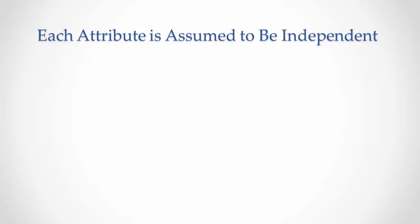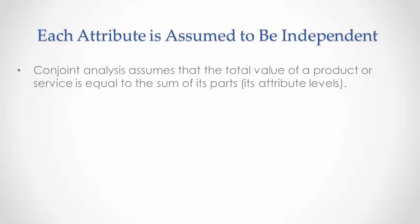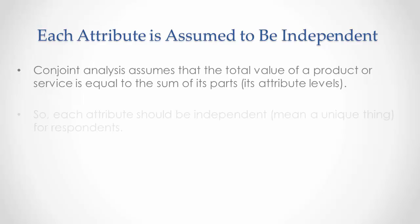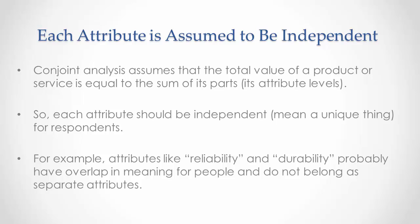Each attribute is assumed to be independent in a CBC or other conjoint analysis study. Conjoint analysis assumes that the total value of a product or service is equal to the sum of its parts, its attribute levels added together. So each attribute should be independent. It should mean a unique thing for respondents. For example, attributes like reliability and durability probably have overlap in meaning for people and do not belong as separate attributes.